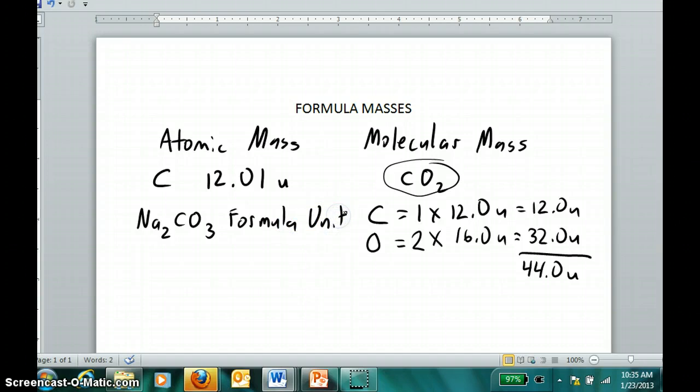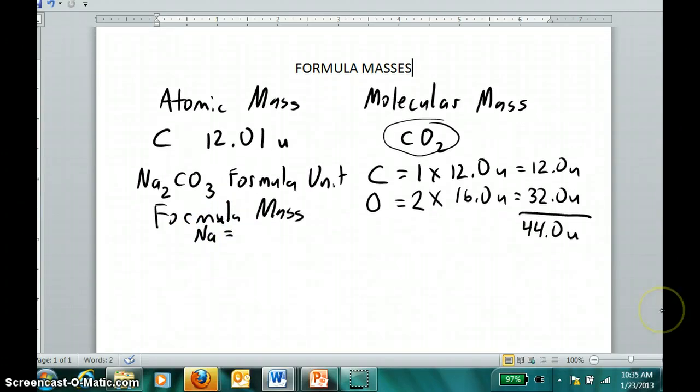We can find the formula mass for sodium carbonate by doing the same thing we do for a molecular mass of a molecular substance. Namely, calculate how many and which types of atoms are present and multiply each by the mass of that particular atom. For instance, in the case of sodium carbonate, sodium comprises two atoms of the formula unit. Since sodium has an atomic mass of 23.0 atomic mass units, it means sodium makes up 46 atomic mass units of the formula's mass.